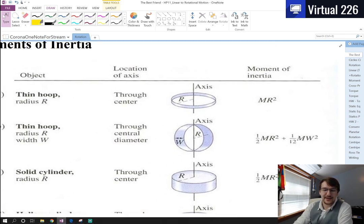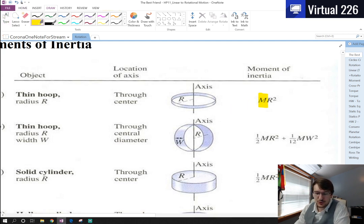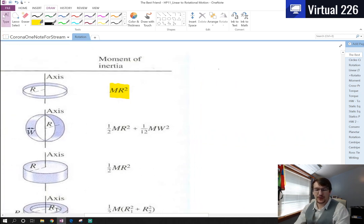If you have a thin hoop, like a hula hoop, where the mass only exists at the edge and there's nothing in between, then the moment of inertia is just the mass of that hoop multiplied by the radius squared. If you're rotating about the center of the axis, this moment of inertia of MR² also applies for a point mass.